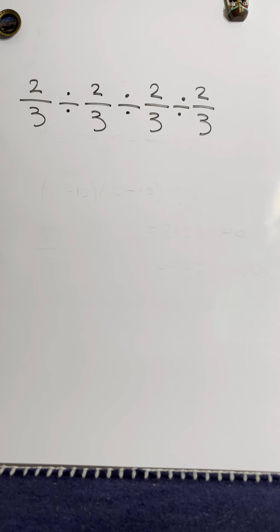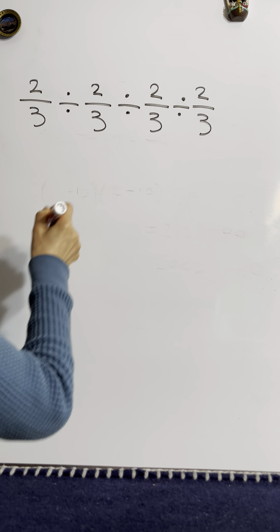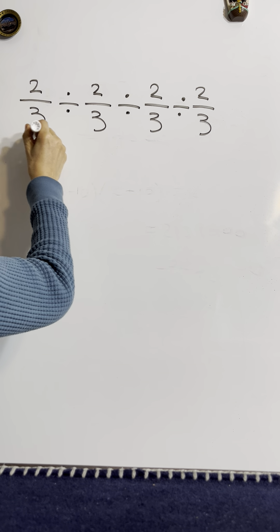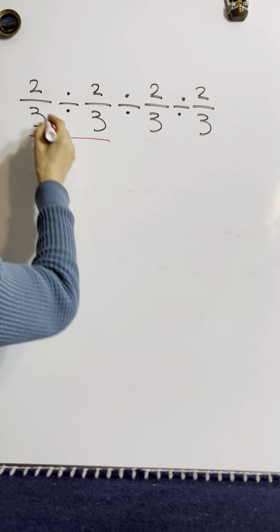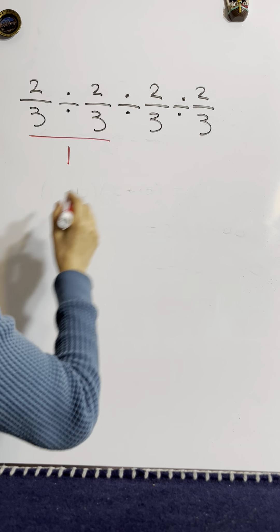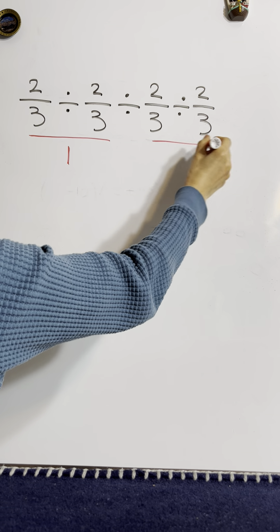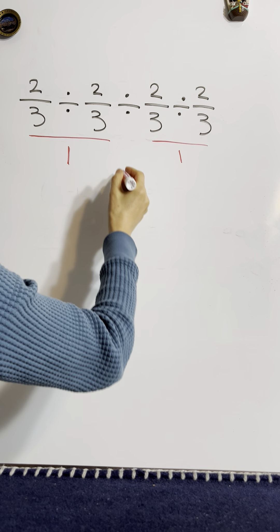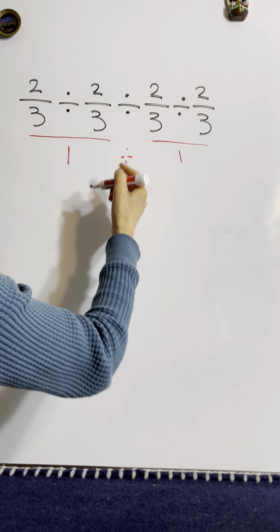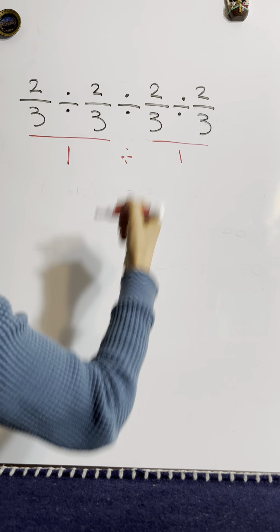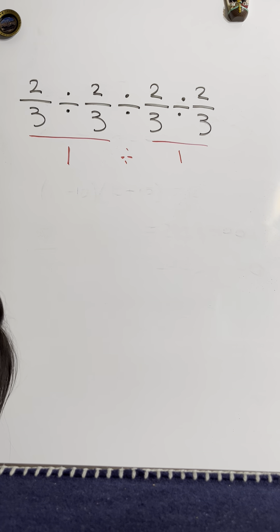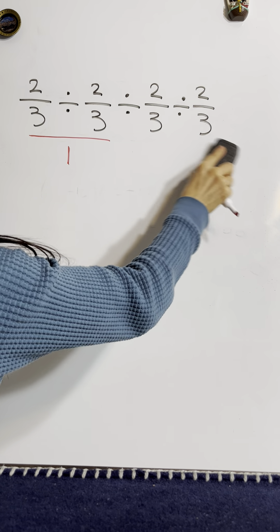Let's see this one. We have four divisions about the same number. So sometimes we tend to think that something divides itself equals one, and something divides itself equals one, so one divided by one is one. No, that's wrong. We cannot do that.